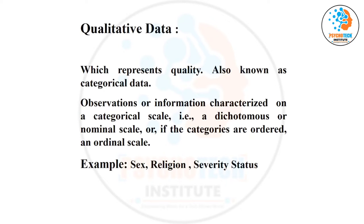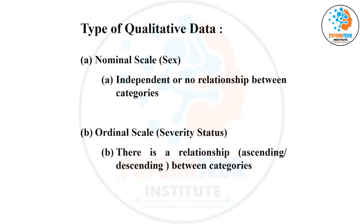Sex: male, female. Religion: Hindu, Muslim, Sikh. Severity of disease: mild, moderate, severe. They are all categorical. But in severity of disease, you know that moderate is always above mild, and severe is always above mild and moderate — there is an order. So qualitative variables are basically of two types: nominal and ordinal. Nominal means there is no relationship between the categories. Ordinal means there is a relationship between the categories, either ascending or descending.